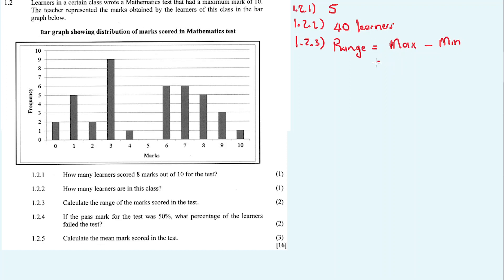1.2.3: calculate the range of the marks scored in this test. The range = maximum mark obtained minus the minimum mark obtained. The maximum mark obtained is 10, and the lowest mark scored is 0. So it's 10 subtract 0, and our answer is 10.